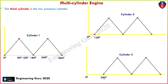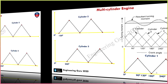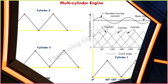The third cylinder starting position is at 240 degrees — first cylinder at 0 degrees, second cylinder at 120 degrees, and third cylinder at 240 degrees — so all cylinders are 120 degrees apart from each other. Starting from 240 degrees: maximum, minimum, maximum, and minimum.